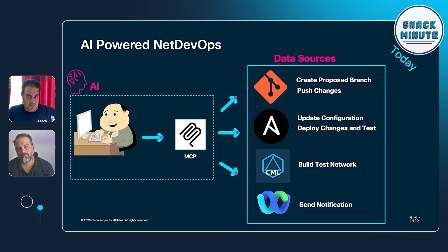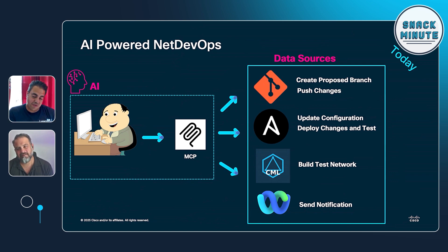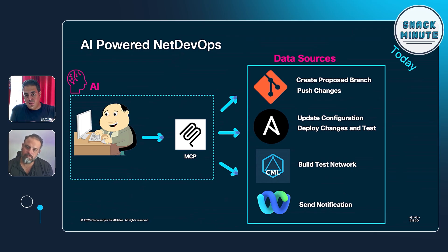Now that we have this use case defined, we can bring in MCP and things become flat. Carl doesn't have to handle a lot of the interactions and work in the pipeline. All Carl needs to do is define the MCP servers and prompt the model to do what he wants from a configuration management perspective. You have MCP servers integrating with GitHub, Ansible, CML, and sending notifications — Carl interacts with it and the AI handles the rest.